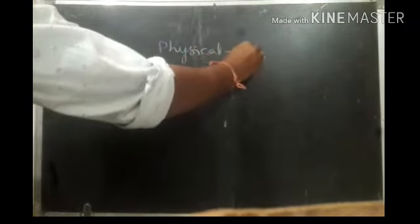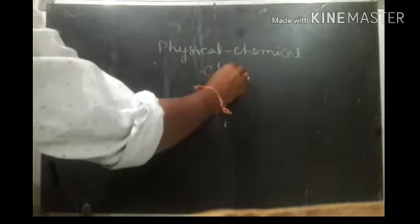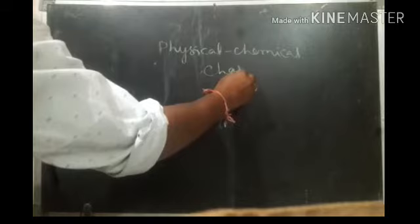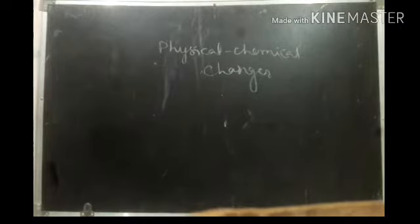Welcome back to the lesson on physical and chemical changes. Physical and chemical changes are very common changes that take place around our surroundings. In this chapter we have already started discussing physical changes, and let us see some more examples that take place around us — starting with boiling of water and condensation of steam.